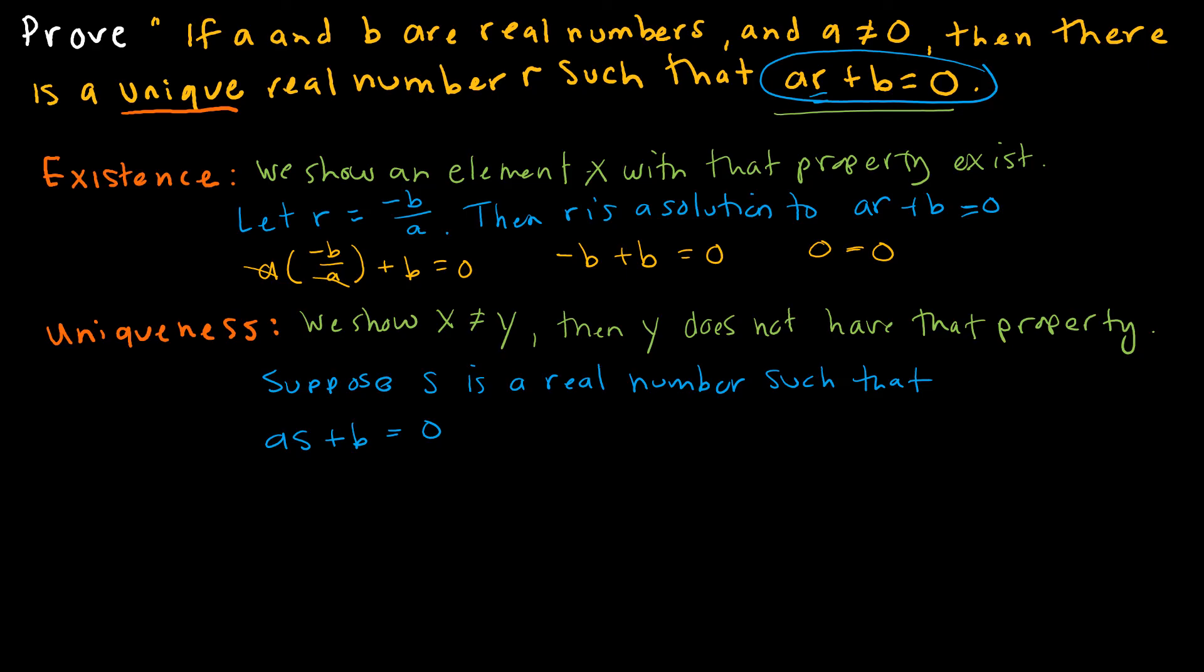Then ar plus b is the same as as plus b, that these things are equivalent. I already know that I can subtract b from each side, so I get that ar is the same as as. If I divide each side by a, I get r equals s.